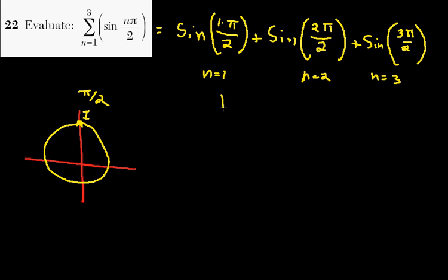So this is equal to 1, the value of the expression is equal to 1, plus at sine 2 pi over 2, or sine of pi, the y-coordinate is 0.